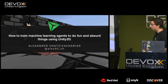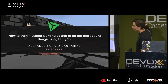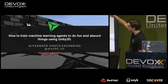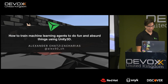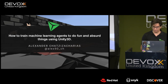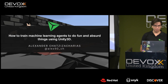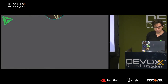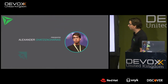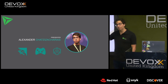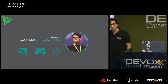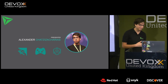Hi, welcome to this talk on how we're going to train machine learning agents to do some absurd things using Unity 3D. My name is Alexander Chatsis-Acharias, a little bit of a tricky surname, but last week in DevOps Greece, everybody could pronounce it, so that's good.